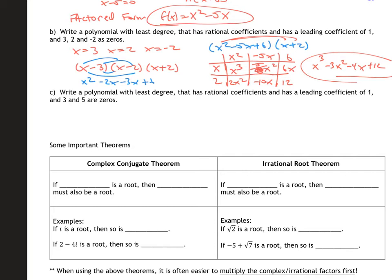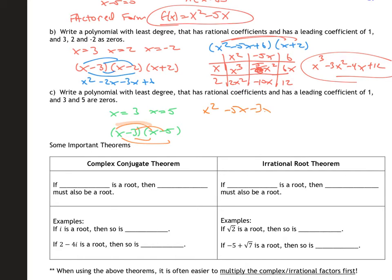One more example: I have x = 1 and x = 5 — I misread earlier, there are only two zeros. Factors are (x − 1)(x − 5). FOIL: first, outside, inside, last — x² − 5x − x + 5, giving x² − 8x + 15. Nice and easy: take your zeros, switch to factored form, FOIL, and multiply it all out.